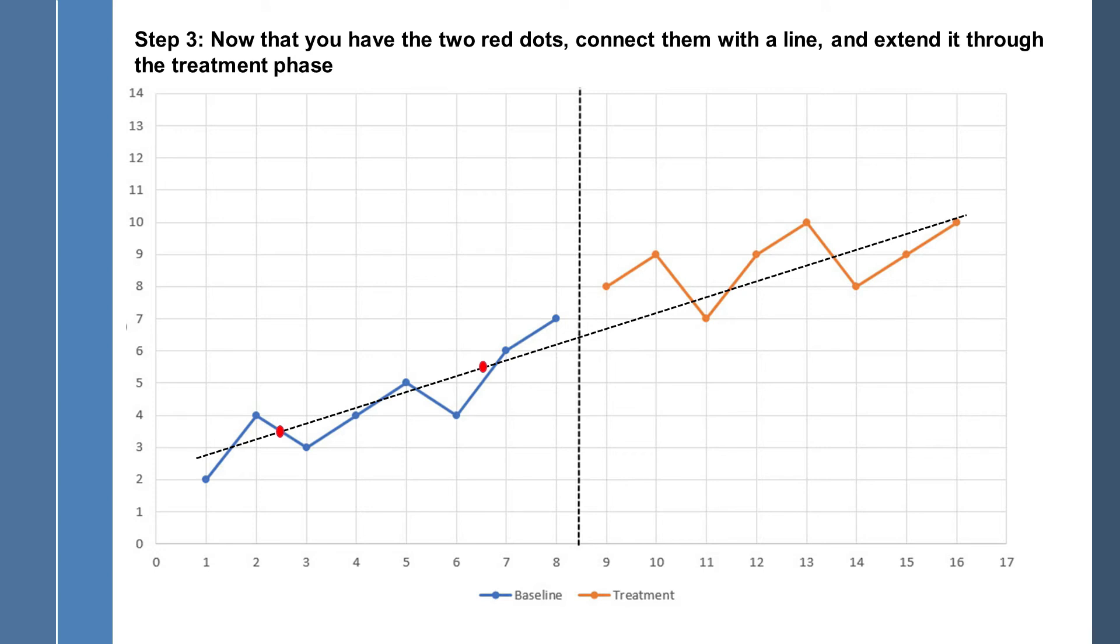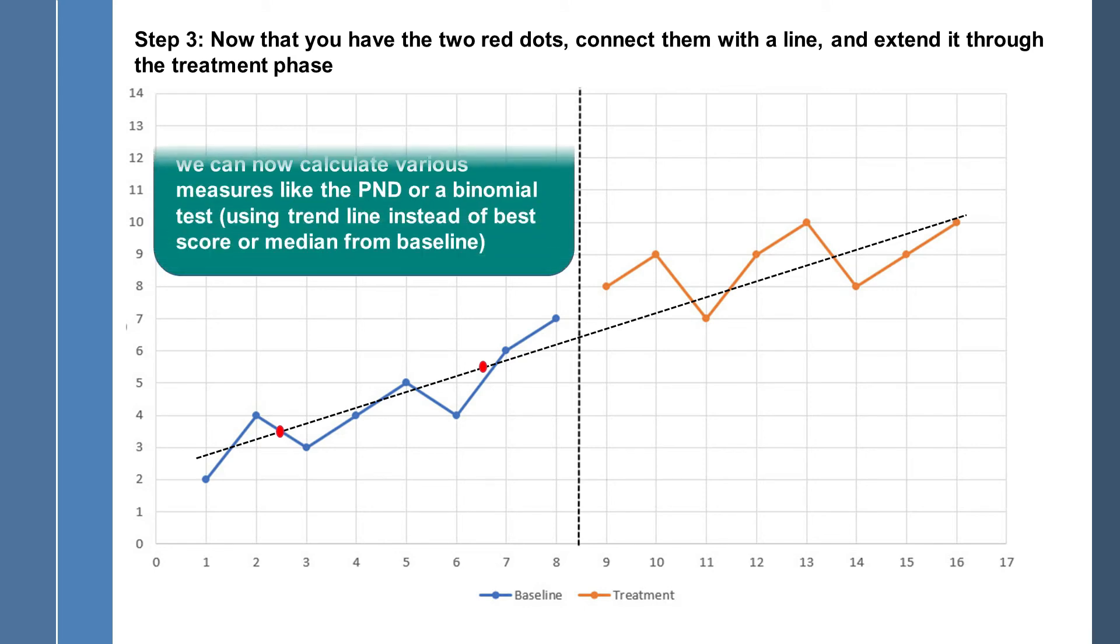In fact, if you calculate the PND, the percentage of non-overlapping data using the baseline trend line instead of the uppermost score of the baseline phase, then the PND would be 0.5. So you can do this with any of the various different statistics for non-overlap data.